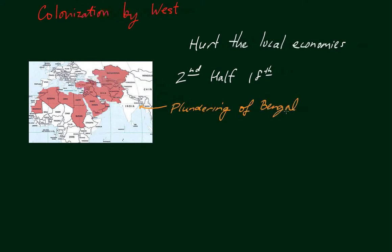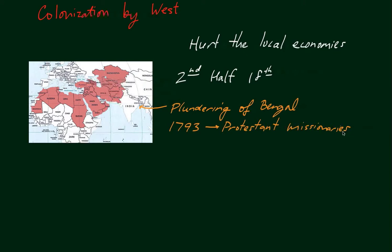Why was it called that? Essentially, the Bengali shifted away from growing crops for themselves and instead began to provide raw materials to the British. The British in turn provided back goods and services, which damaged the local industry. The British began to take stronghold in India, and in 1793 Protestant missionaries arrived, whose goal was to, quote, help civilize Indians. That was also a major inflection point in Indian history.